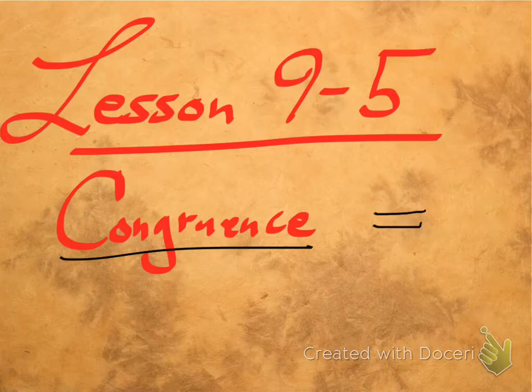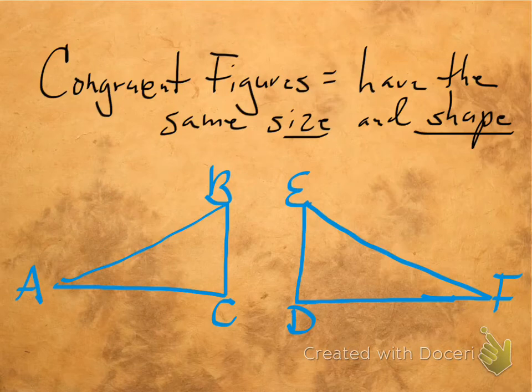The symbol for congruence is an equal sign with a single little wavy line on top. So this symbol right here means congruence. Congruent figures are figures in geometry that have exactly the same size and the same shape.